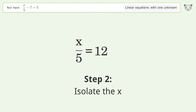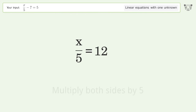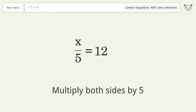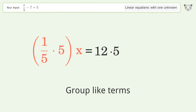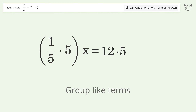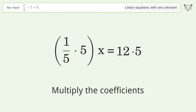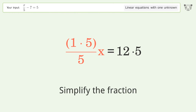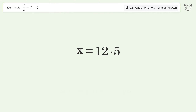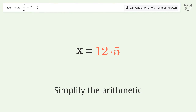Isolate the x: multiply both sides by 5. Group like terms, multiply the coefficients, simplify the fraction, and simplify the arithmetic.